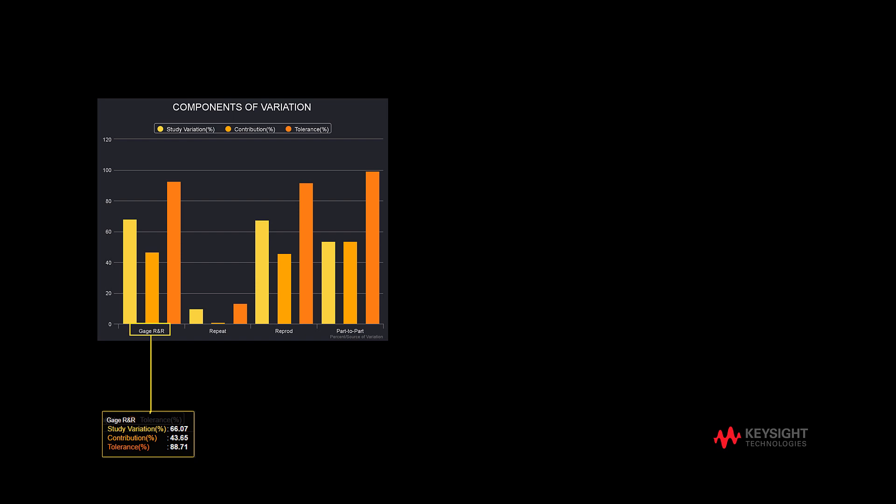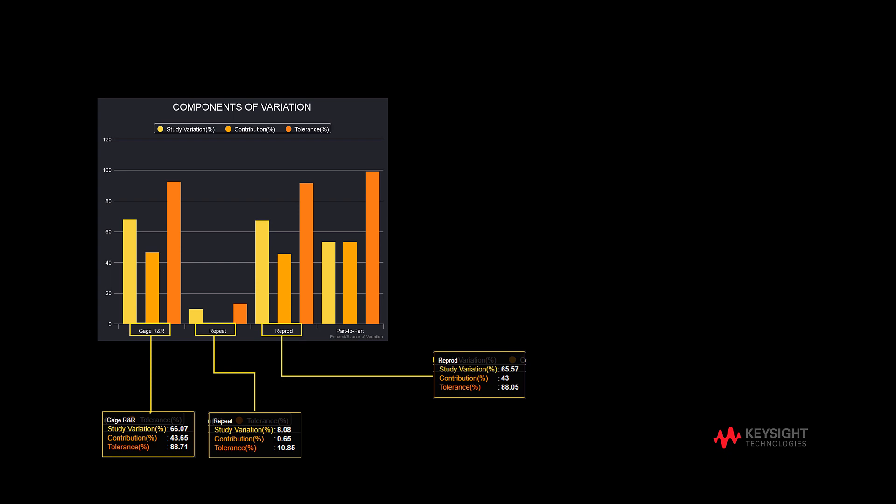The other sets of bar charts provide the same information on study variation, contribution, and tolerance for repeatability, reproducibility, and part-to-part variation respectively. A good measurement system should not exceed more than 10% of total variance.